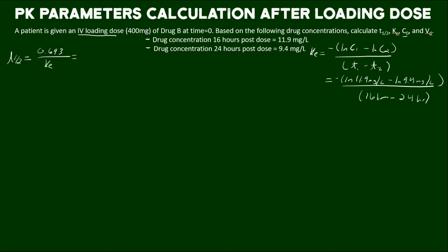What we have is natural log of 11.9, which is our concentration at 16 hours, minus the natural log of 9.4, which is that second concentration at 24 hours. So if you were to plug that in to your calculator,